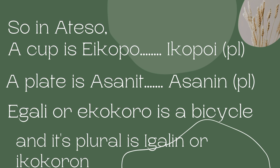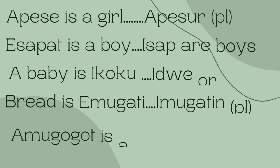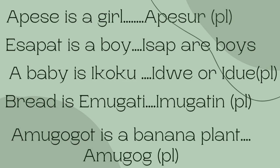A plate is asanit. Asanin is the plural. E gali o ekokoro is a baisko, and ituboro is igarin.